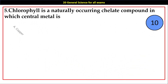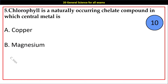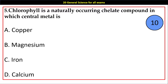Question number 5. Chlorophyll is a naturally occurring chelate compound in which the central metal is: Options A. Copper, B. Magnesium, C. Iron, D. Calcium.